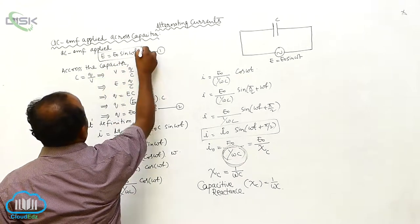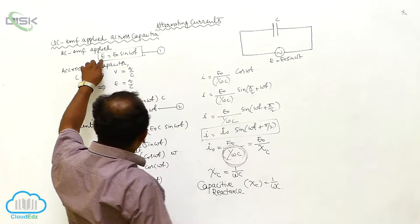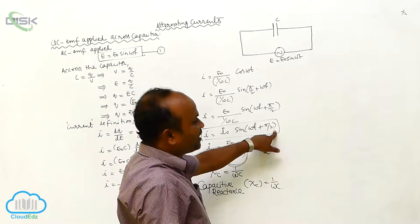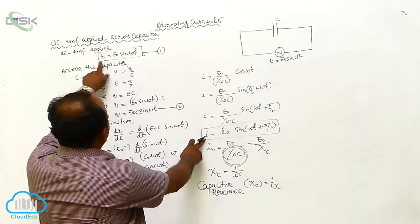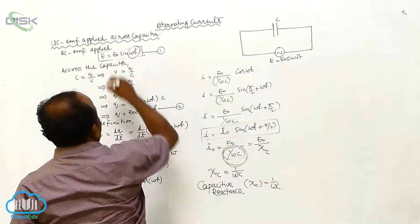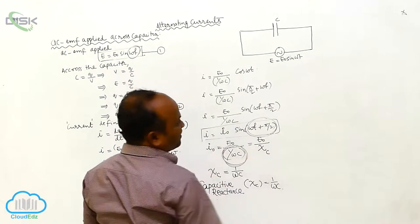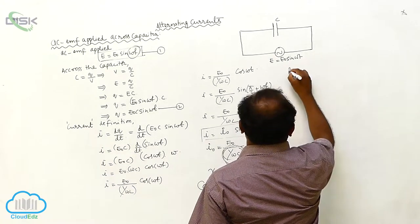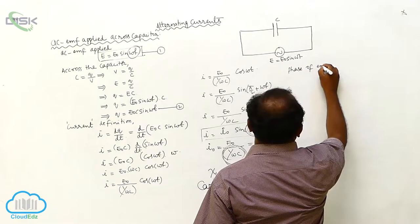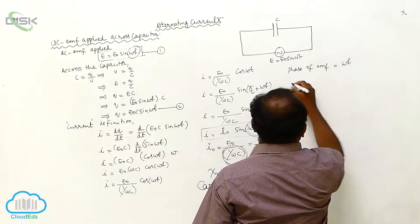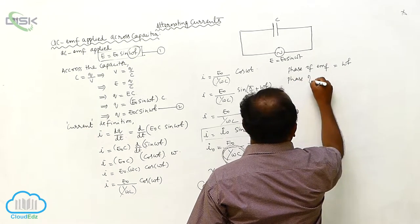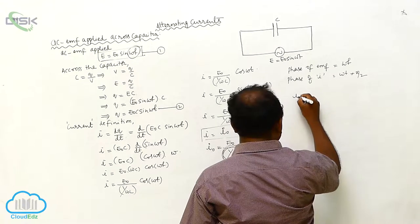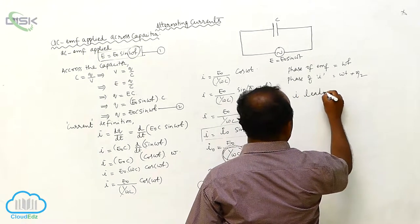The capacitive reactance Xc = 1/ωC. The EMF is E = E₀ sin(ωt) and the current is I = I₀ sin(ωt + π/2). The phase of EMF is ωt, and the phase of current is ωt + π/2.